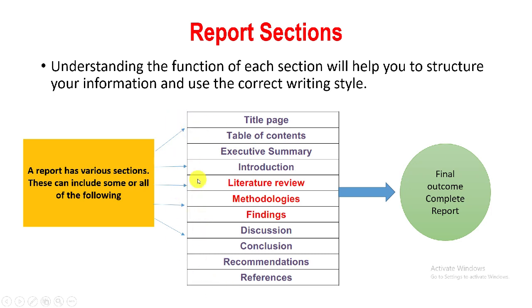The sections of an academic report include: title page, table of contents, executive summary, introduction, literature review, methodology, findings, discussion, conclusions, recommendations, and references.